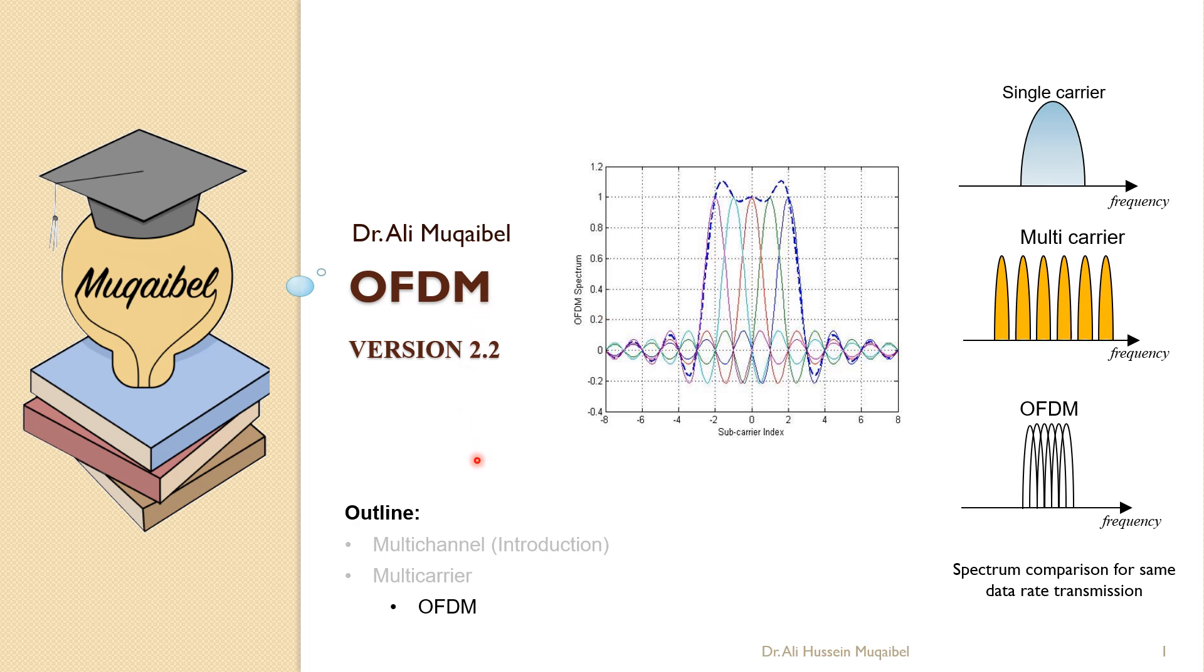We have already covered an introduction to that through multi-channels and multi-carriers. Specifically, now we'll go on to orthogonal frequency division multiplexing OFDM as one example or one special case of multi-carrier systems.